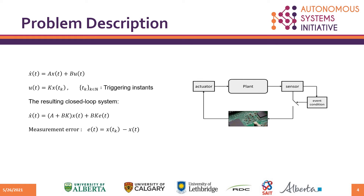To better illustrate the idea behind our contribution, we consider a simple linear time-invariant system together with a state feedback controller which communicates with the plant through an event-based mechanism. We arrive at the following closed-loop model in which the measurement error e represents the difference between the current state value and the most recently triggered one.